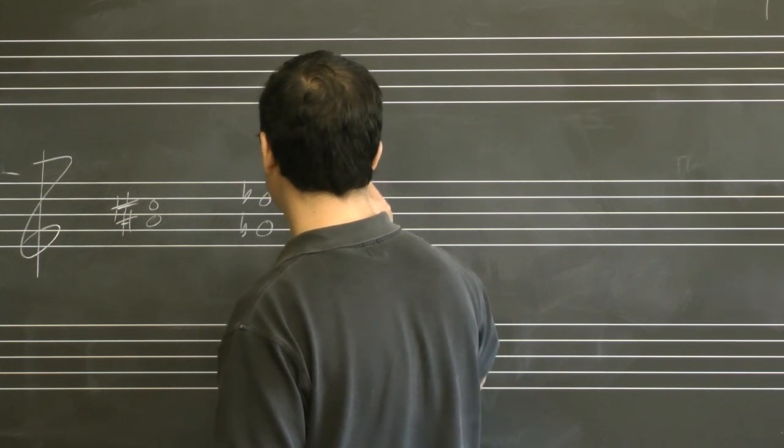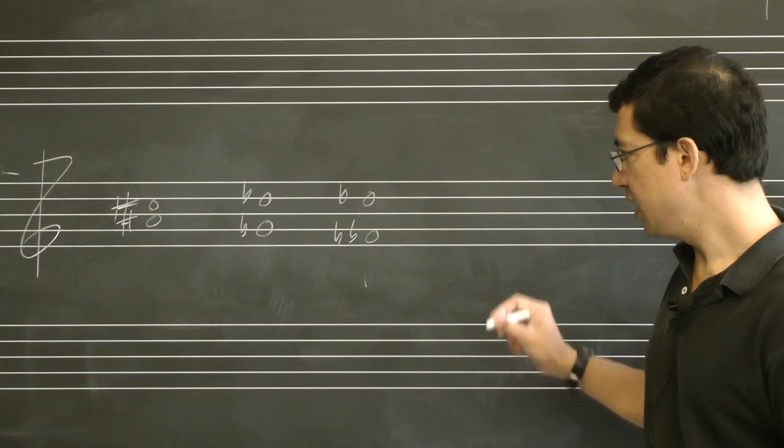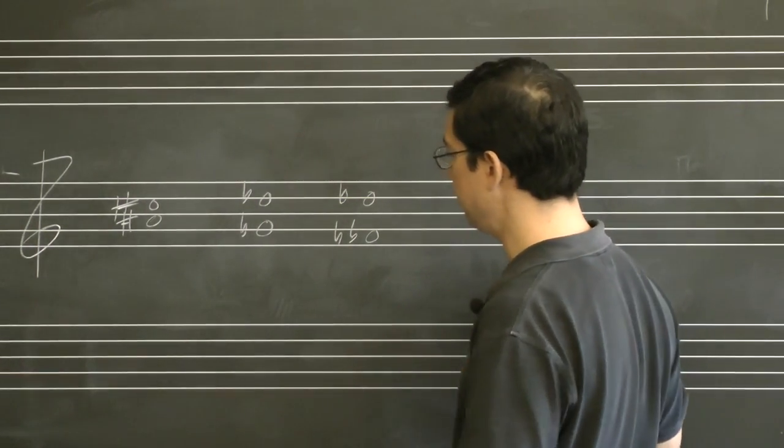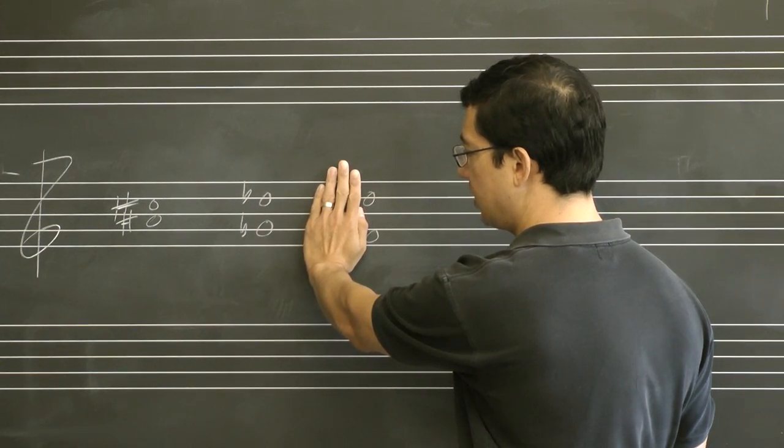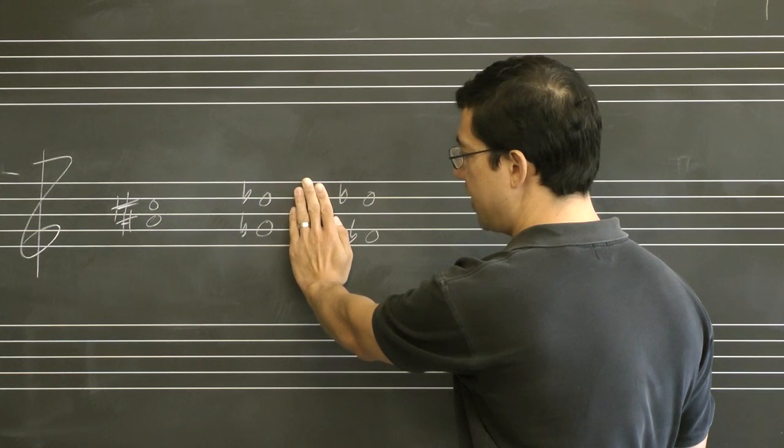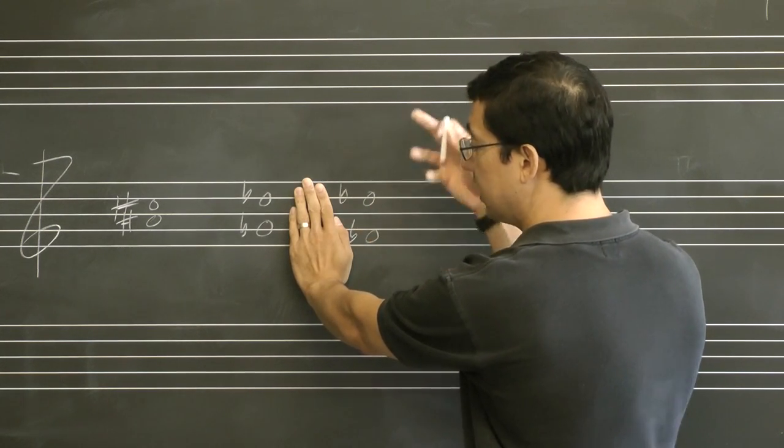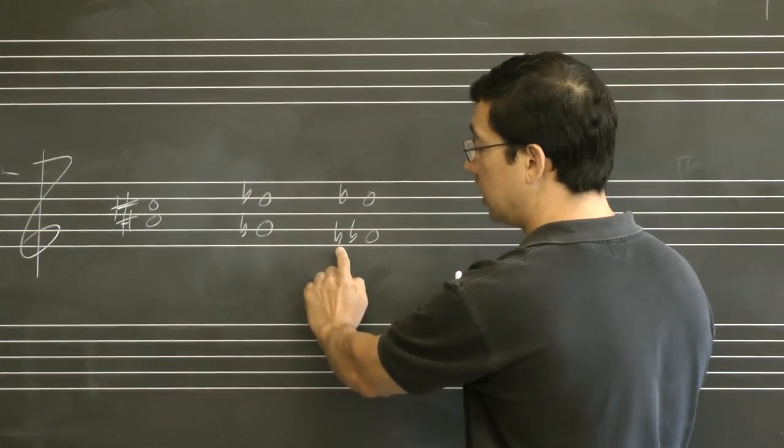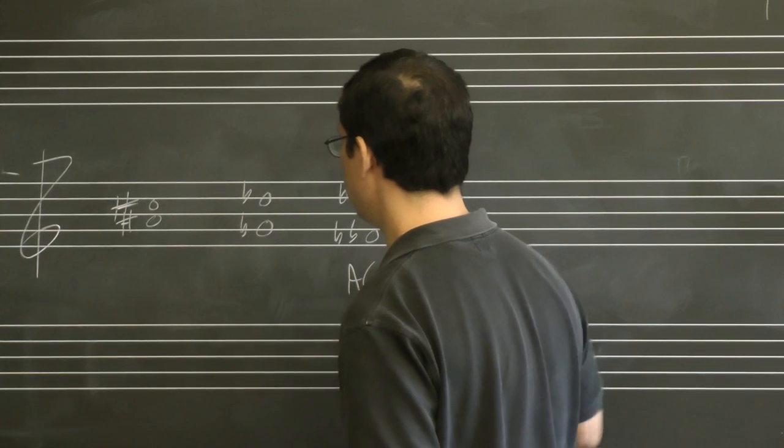Now, what if I've got something a little bit more evil like this? There are two ways of approaching this. It kind of works out to the same thing. First, we can ignore all the accidentals and we say that's a minor sixth. Then we say, okay, we've got two accidentals, so those don't do anything. That just shifts both down by a half step and it preserves the interval of a major sixth. Now, we lower the lower note, that makes the interval one bigger than a major sixth, which means we're dealing with an augmented sixth.